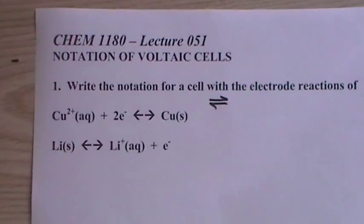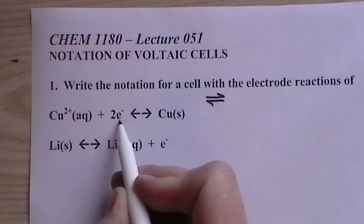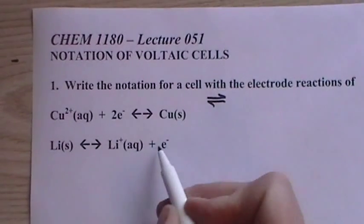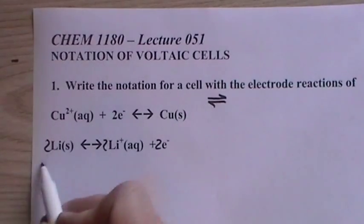Now it just wants the notation. So the first thing you do, you have to balance it as a regular reaction. So two electrons here, so this is the reduction, this is the oxidation, so we need two electrons here, two, two and two, then add them up.